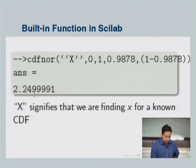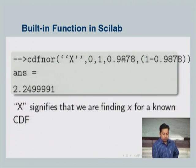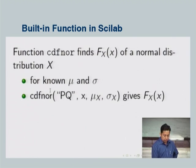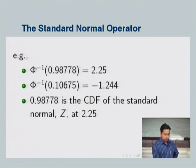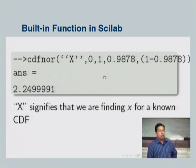Here is a command to find the inverse CDF of a normal random variable with mean 0 and standard deviation 1. We take the value 0.98778 for p, and q equals 1 minus p. You can write q recursively, and Scilab gives you back the answer — confirming that phi-inverse of 0.98778 equals 2.25, consistent with the standard normal table result.